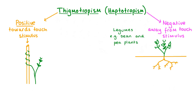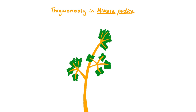In certain plants like legumes, which include bean and pea plants, the roots rely on their sense of touch to help them grow into the soil without encountering much resistance. When the roots come into contact with solid objects underground like rocks or stones, they are stimulated to grow away from them. Since the direction of movement is away from the touch stimulus, this is called negative thigmatropism.